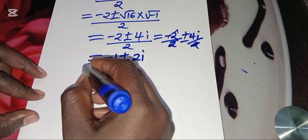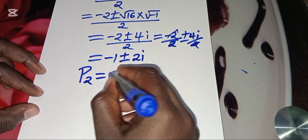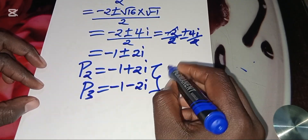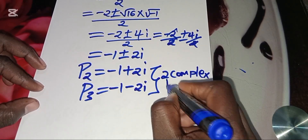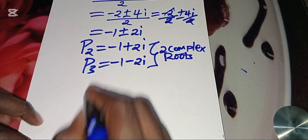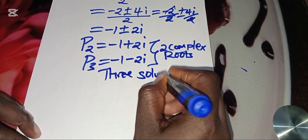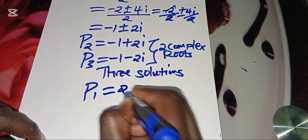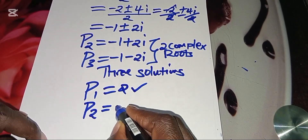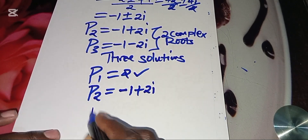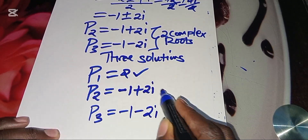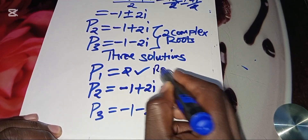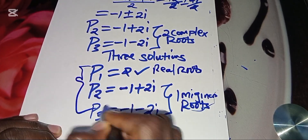So P2 is equal to negative 1 plus 2i, and P3 is equal to negative 1 minus 2i. These are two complex roots — imaginary roots. Our equation has three solutions: P1 equals 2, which is the only real root, and P2 equals negative 1 plus 2i, and P3 equals negative 1 minus 2i, which are imaginary roots.